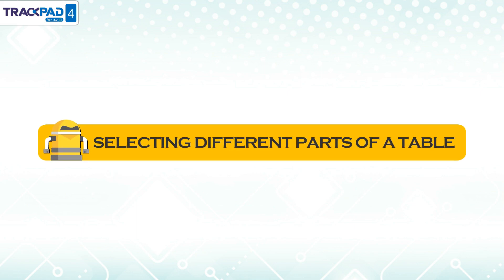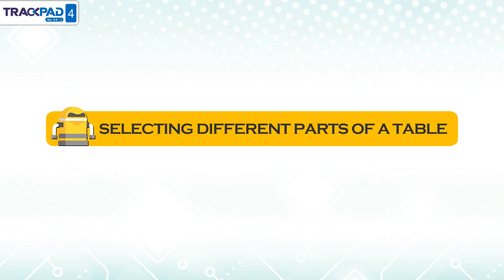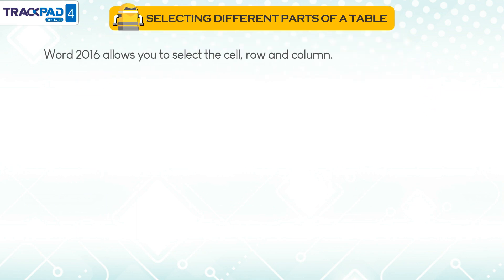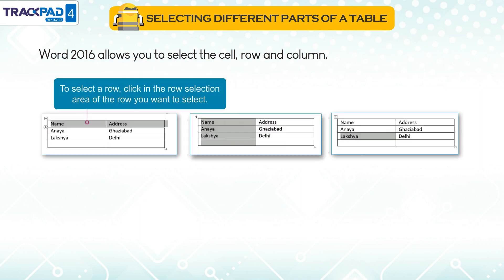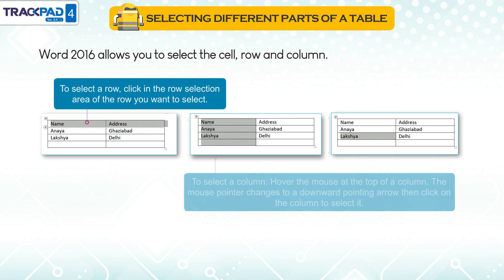Selecting different parts of a table. Word 2016 allows you to select the cell, row and column. To select a row, click in the row selection area of the row you want to select.